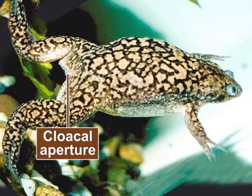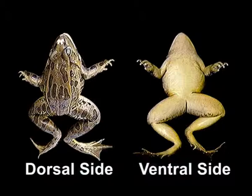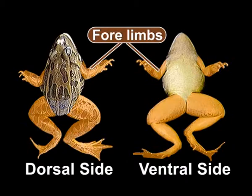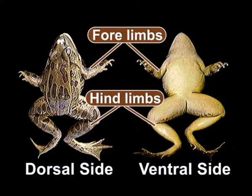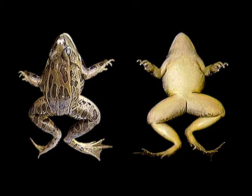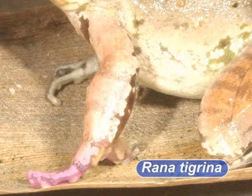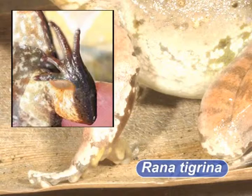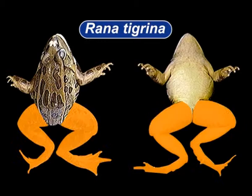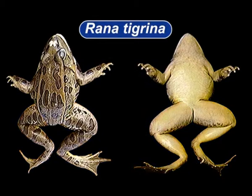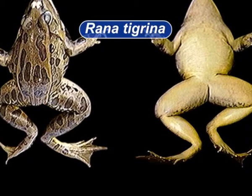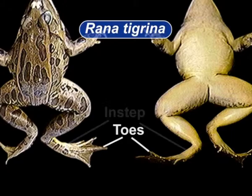The trunk bears a pair of forelimbs and a pair of hindlimbs. The hindlimbs are much longer and more powerful than the forelimbs. The forelimbs consist of an upper arm, forearm and hand. In the case of the male, a cushion-like pad develops on the index finger during the breeding season. Each hindlimb is Z-shaped and consists of three parts: upper thigh, middle shank and foot. The foot in turn is divided into ankle, instep and toes. Between the toes there is a membranous fold of skin forming a web.